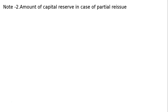Working Note 2 — Amount of Capital Reserve in case of partial reissue: (Amount forfeited ÷ Number of shares forfeited) × Number of shares reissued minus discount on reissue. That is (₹450 ÷ 90) × 80 minus 0 (no discount on reissue). The forfeited amount is ₹450 on 90 shares (9×5 = 45, so ₹450). Capital Reserve = ₹400.